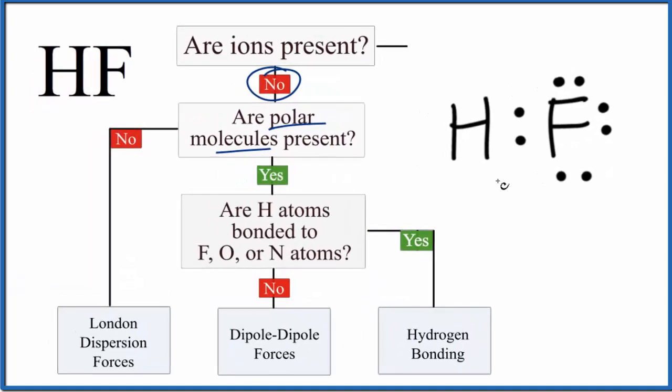This is our Lewis structure. You can see we have a hydrogen atom bonded to a fluorine. Fluorine is the most electronegative element on the periodic table, and there's a big difference between hydrogen and fluorine. That means the electrons in this bond will spend more time with fluorine.